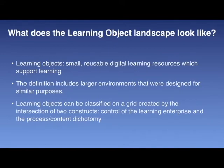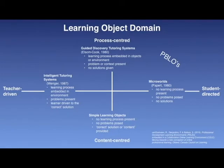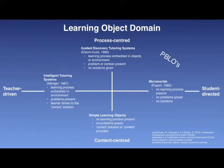Learning objects can be classified on a grid created by the intersection of two constructs, as shown on the slide. One construct concerns the control of the learning enterprise — that is, whether control is exercised by the teacher, or whether the student has some measure of control as to what and how to learn, as in student-directed. The second construct is oriented around the process-content dichotomy. These two constructs form the axes of the grid, and the remainder of this video clip discusses the characteristics of the various systems that give form to the learning object landscape.